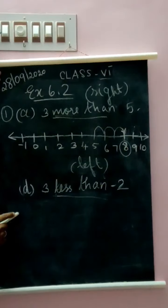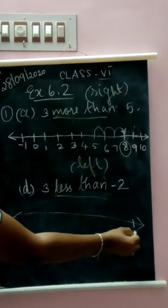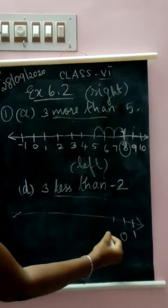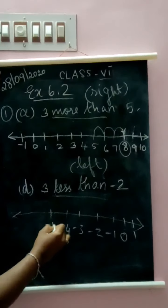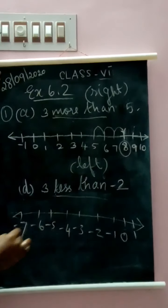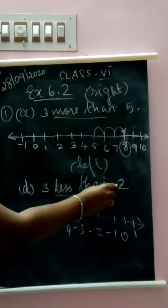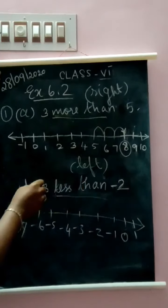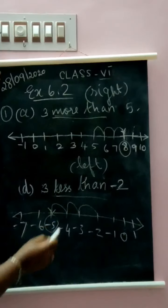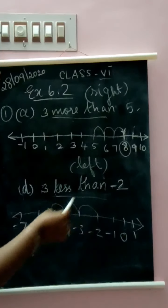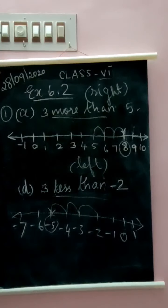For the next subdivision, we concentrate on the negative part. Draw the number line: 1, 0, minus 1, minus 2, minus 3, minus 4, minus 5, minus 6, minus 7. Start from minus 2 and move three steps to the left — three less than minus 2. One, two, three steps left and we reach minus 5. So three less than minus 2 is minus 5.